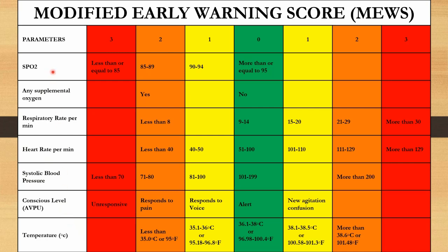The first parameter is oxygen saturation. If it is more than or equal to 95%, give a score of 0. If it is between 90 to 94%, give a score of 1. If it is between 85 to 89%, give a score of 2. If the oxygen saturation is less than or equal to 85%, give a score of 3. If the patient is on room air, give a score of 0; if on any supplemental oxygen, give a score of 2.